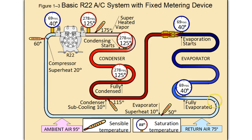Picking up superheat ensures that we have 100% vapor entering the compressor. At the tail end of the evaporator it picks up superheat, raising the sensible heat and the temperature of the refrigerant as it moves through the refrigeration line and back to the compressor as low-temperature, low-pressure superheated vapor. It is compressed in the compressor and the cycle begins again.